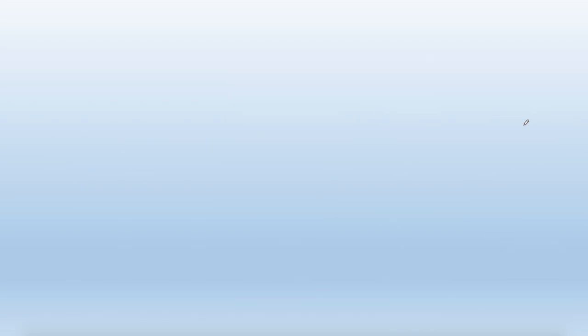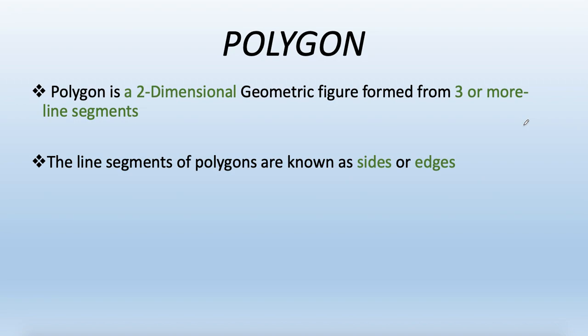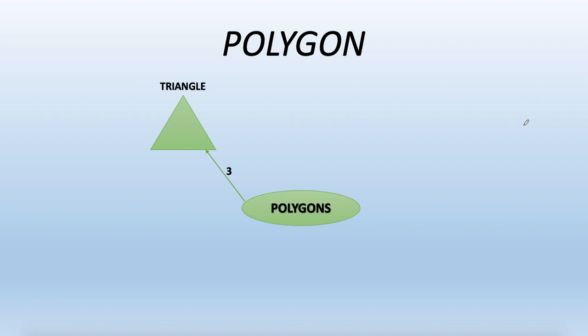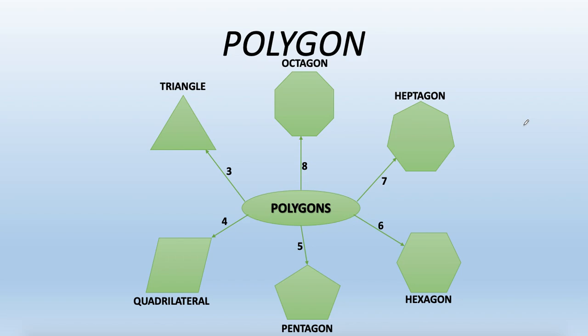Starting with the triangle, first of all just have a quick overview about the polygon. A polygon is a two-dimensional geometrical figure formed from three or more line segments. The line segments of a polygon are known as sides or edges, and the point where these edges meet is known as a vertex or corner. Common polygons: three sides is a triangle, four sides a quadrilateral, five a pentagon, six a hexagon, seven a heptagon, and eight an octagon.